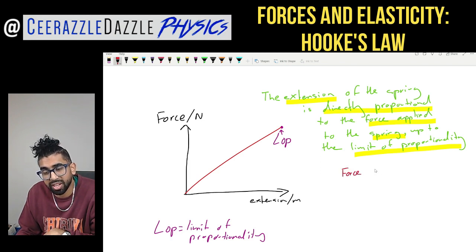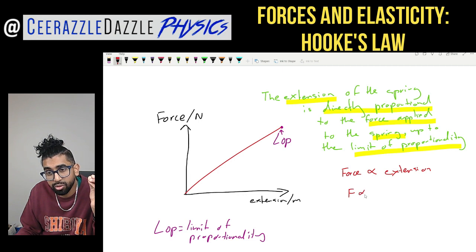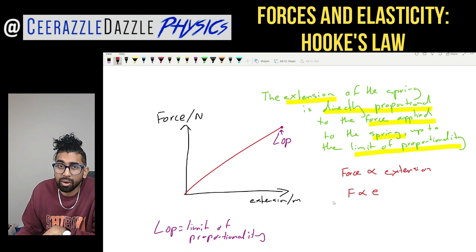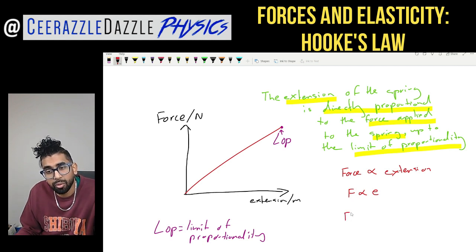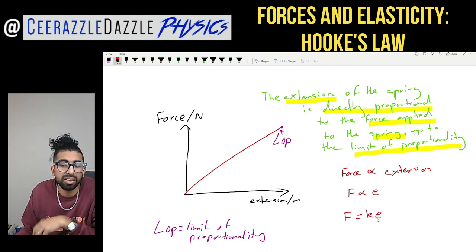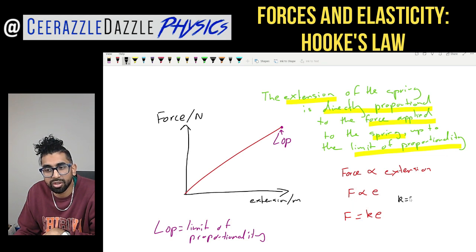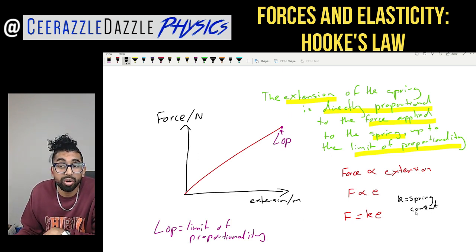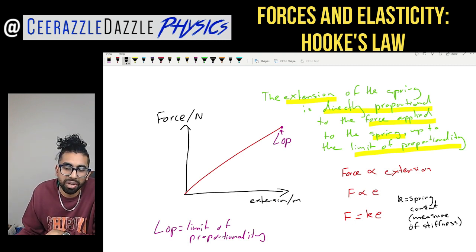We can say that force is directly proportional to the extension of the spring. In symbols: F ∝ e. In maths, we can convert the proportional sign into an equation by introducing a constant k, giving us F = ke. This k is the spring constant.